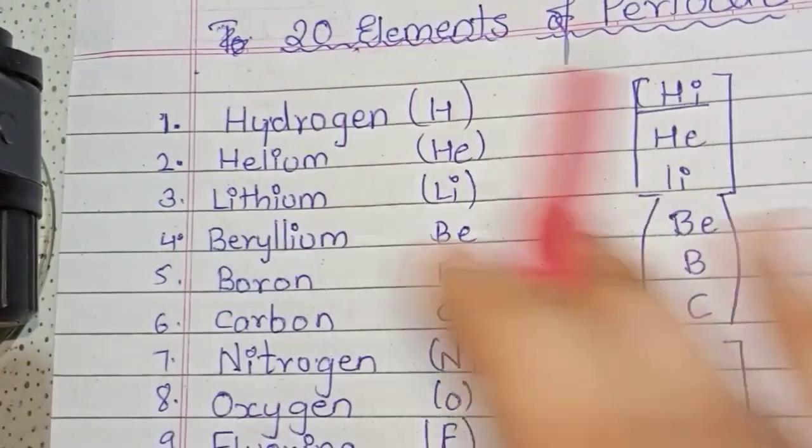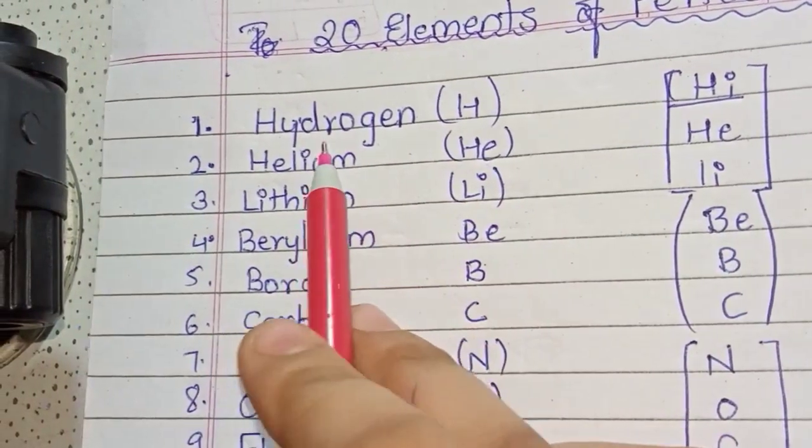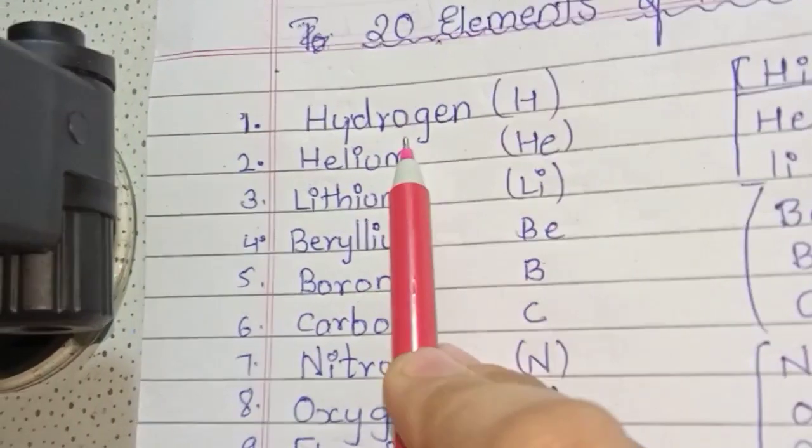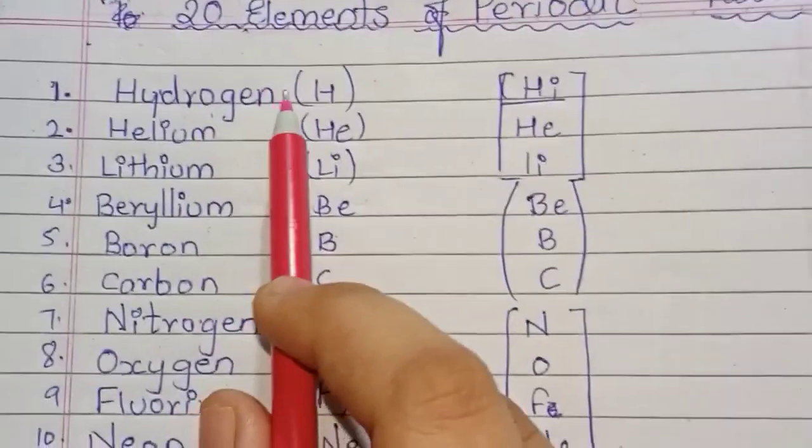First, I will read all the 20 elements. First element is Hydrogen which is denoted by H. We will use the alphabet H.